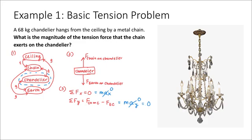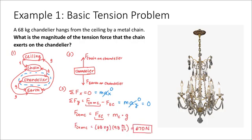Because I'm looking for the magnitude of the force that the chain exerts on the chandelier, I can rearrange the y equation since it equals zero. The force the earth exerts on the chandelier equals the mass of the chandelier times g, which is 9.8. Plugging in the values gives a force of approximately 670 newtons, rounding to the nearest 10 newtons. This is a basic example involving one tensional force and one object.